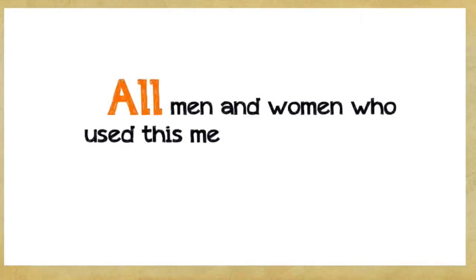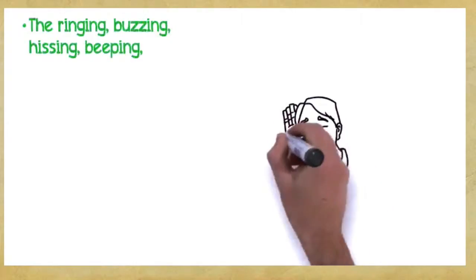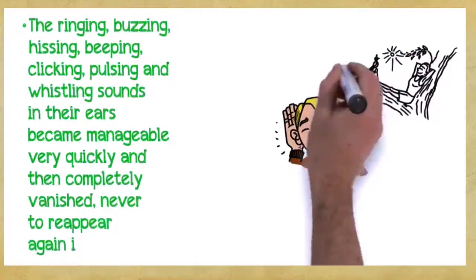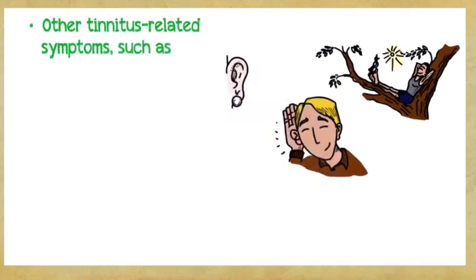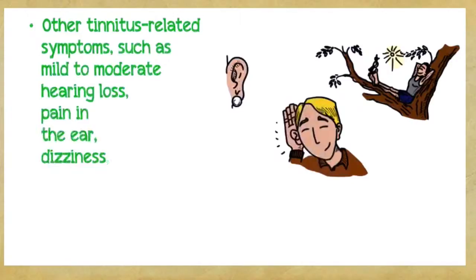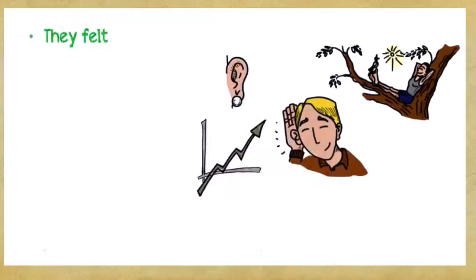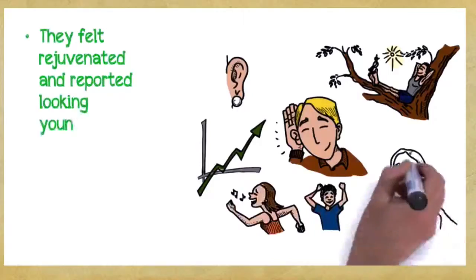All men and women who used this method experienced the following benefits. The ringing, buzzing, hissing, beeping, clicking, pulsing, and whistling sounds in their ears became manageable very quickly and then completely vanished, never to reappear again in less than 30 days. Their feelings of tension, anxiety, agitation, and exhaustion from tinnitus vanished. Other tinnitus-related symptoms such as mild to moderate hearing loss, pain in the ear, dizziness, and the feeling of fullness in the ear were completely eliminated. They felt happier, calmer, and more energetic. They felt rejuvenated and reported looking younger and more vibrant.